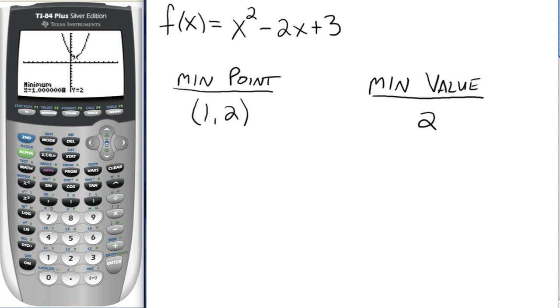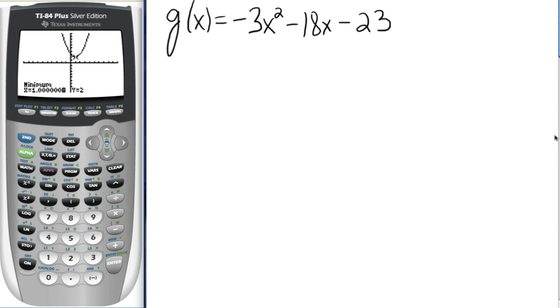Let's try one more. So let's graph this. So go back to y equals, hit clear, and let's put in, now this is the negative button down here, don't use the minus. So put negative 3x squared. Now minus 18x minus 23. And we'll graph that.